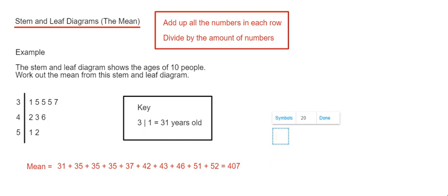Once we've got that answer, we just need to divide by how many numbers we've got. Remember we have 10 people here. So we go 407 divided by 10.